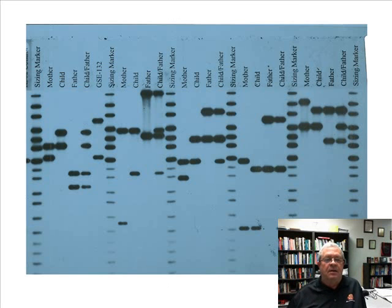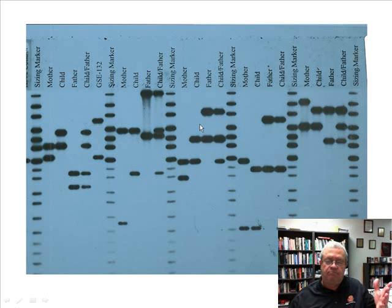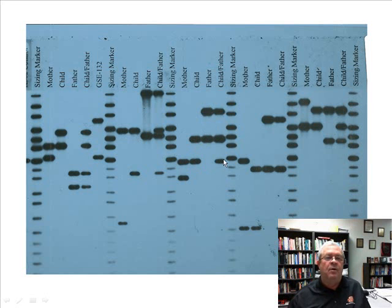Anyway, back to paternity gels. What's the basic principle? In the child, the child will have a certain number of bands, and between the real mother and the real father, all bands in the child's lane should be accounted for — as they are over here. Here's the child between the real mother and a potential real father. Between the real mother and the real father, all bands in the child's lane should be accounted for. That's it.